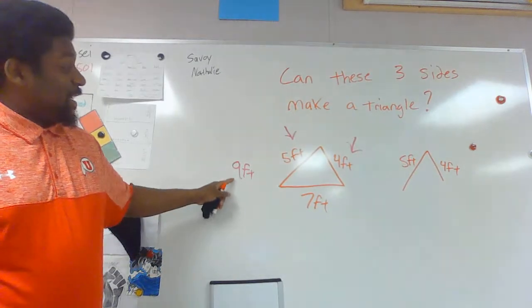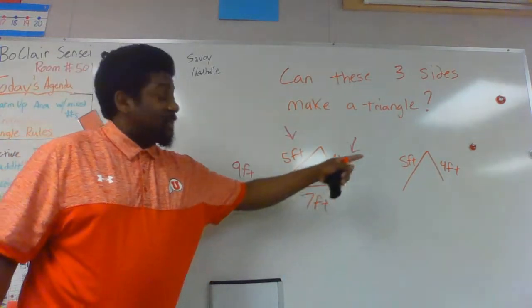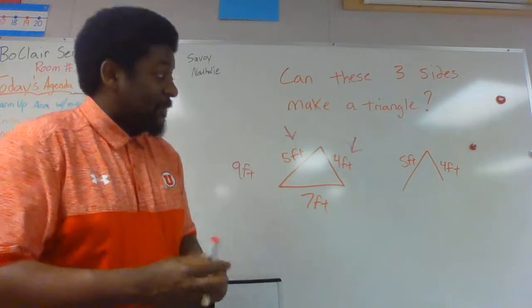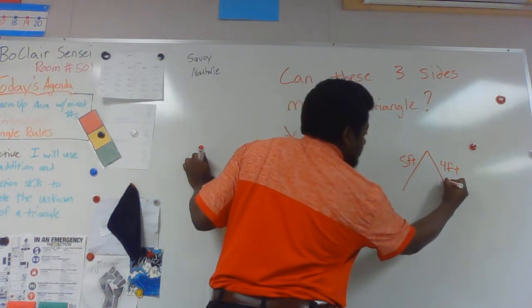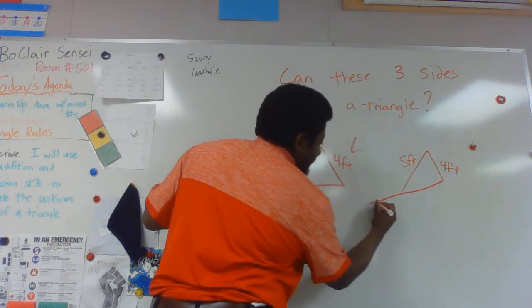For example, since these two add up to 9 feet, if I use another example triangle over here and instead I made a larger third side and I tried to make that 9 feet long, that's too long to make a triangle.